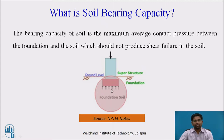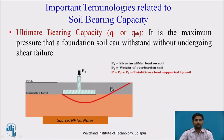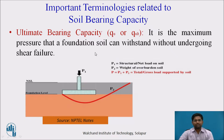It means it should not produce any shear failure at the base of footing. Now, the important terminologies related to soil bearing capacity. First one: ultimate bearing capacity, which is designated by QU or Q-ultimate. It is the maximum pressure that a foundation can withstand without undergoing shear failure.